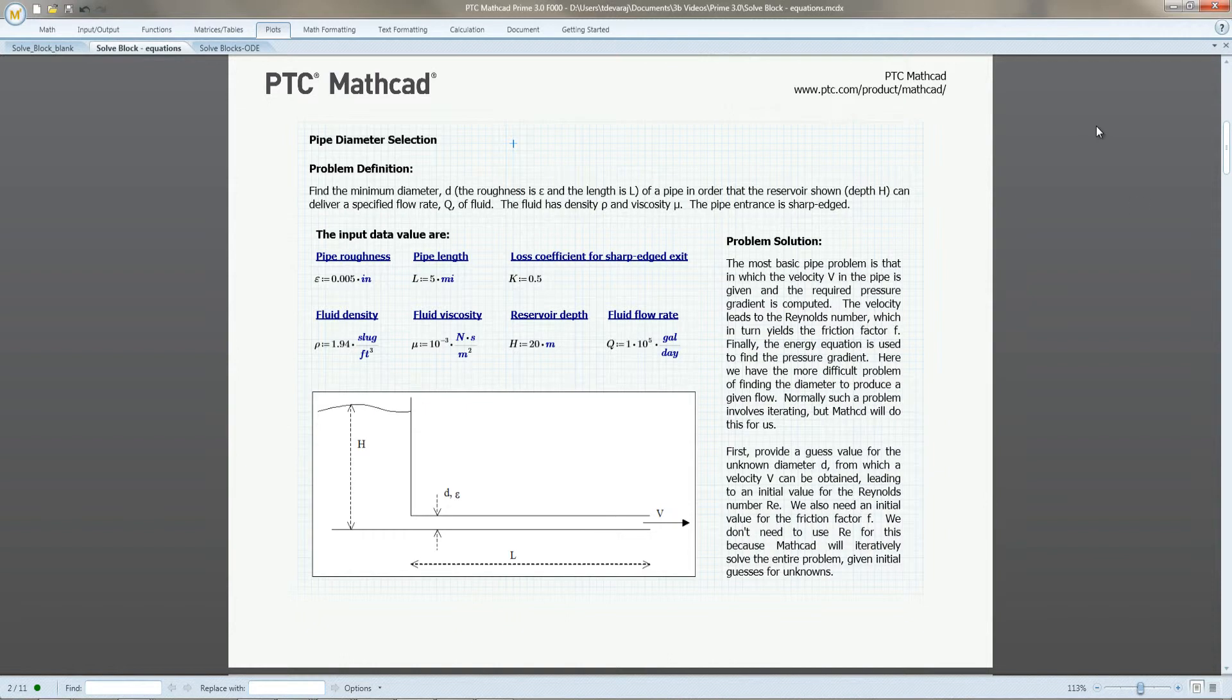Now, let's look at a real-world problem. We want to find the minimum pipe diameter in a reservoir to deliver a specified rate of flow. We need to account for pipe length and roughness, flow rate, reservoir depth, and fluid properties.